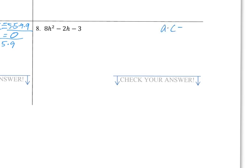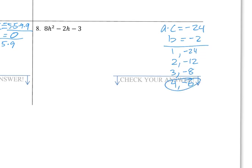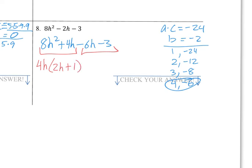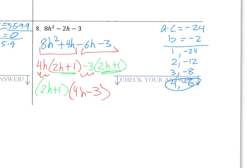For the last one: a times c equals negative 24, trying to add to negative 2. The negative has to be the bigger number. Working through: 4 times negative 6 adds to negative 2 — that's our winner. So we get 8h squared plus 4h minus 6h minus 3. Pairing: I take 4h out of the first pair, leaving 2h plus 1. I take minus 3 out of the second pair, also leaving 2h plus 1. Same parentheses: 2h plus 1 comes out front, and the leftovers 4h and minus 3 go in the other parentheses. You are done. If you want to check your answer, multiply it out.